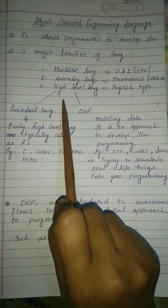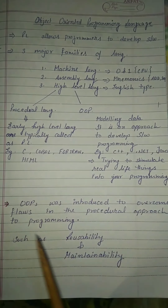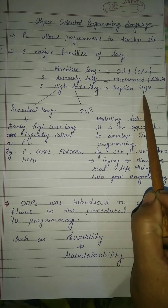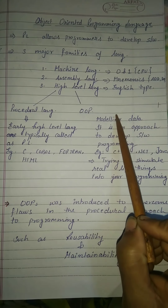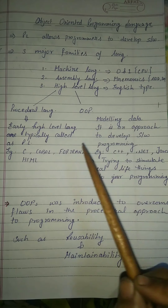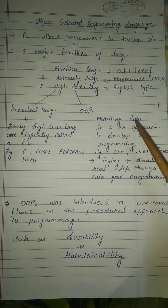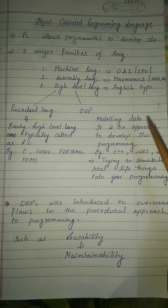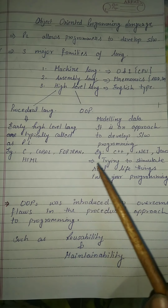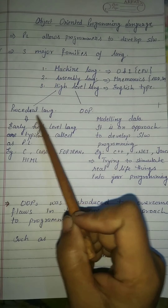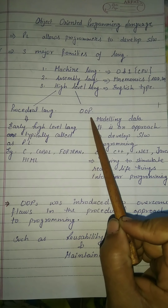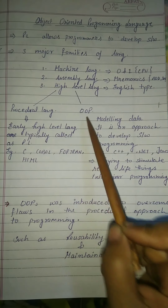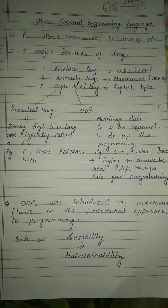The third one is high-level language. High-level language is English-type language — its syntax is similar to English. High-level language is divided into two types: procedural language and object-oriented programming language.